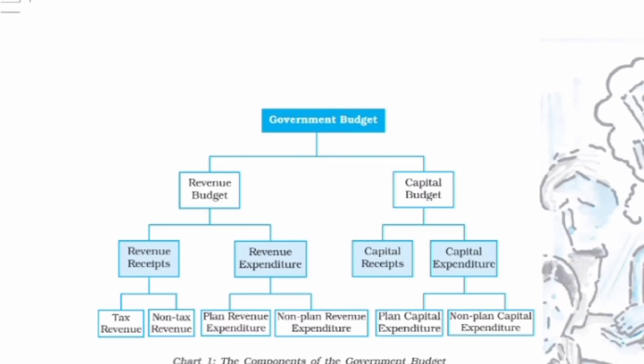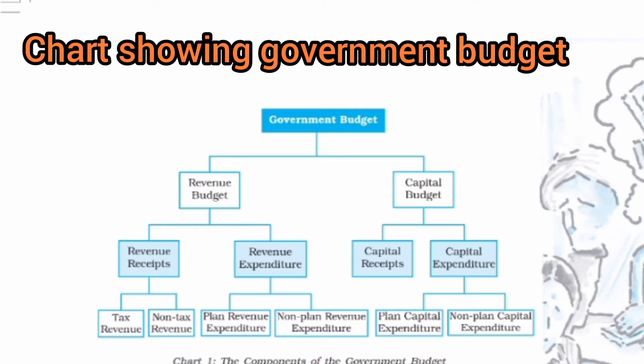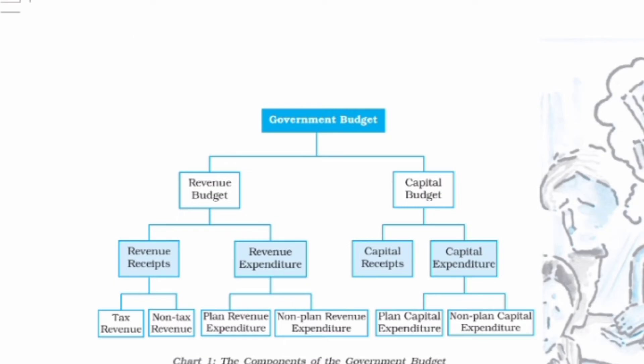Now the components of Government Budget are shown like this. As you see here, Government Budget is mainly classified into two categories: Revenue Budget and Capital Budget. Revenue Budget is further classified into Revenue Receipts and Revenue Expenditure. Revenue Receipts is further classified into Tax Revenue and Non-Tax Revenue.